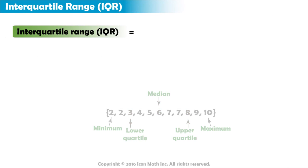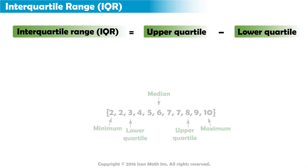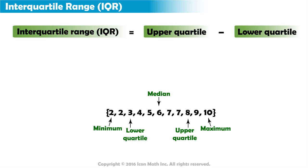Now that we've identified the quartiles, let's find the interquartile range or IQR. The IQR is found by subtracting the lower quartile from the upper quartile. Our upper quartile is 8 and the lower quartile is 3, making the interquartile range 8 minus 3, or 5.